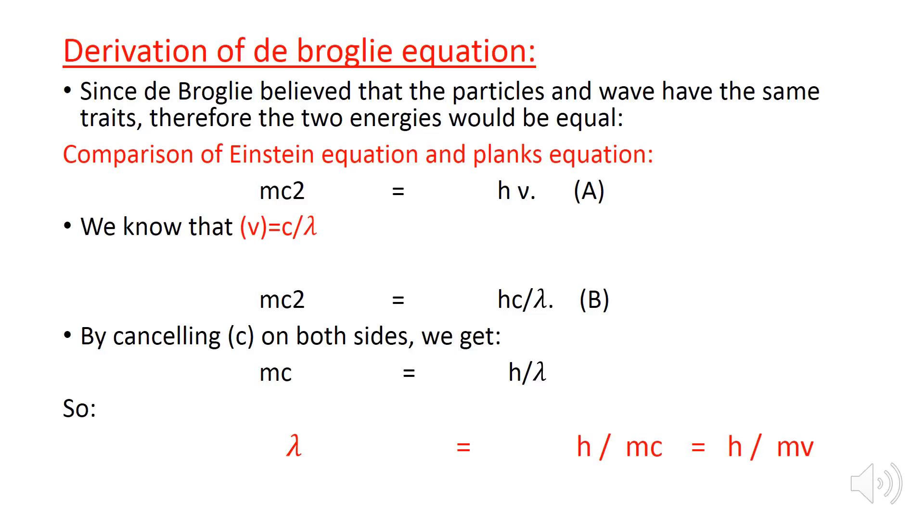Or lambda equals h divided by mv. So here, lambda is the de Broglie wavelength.